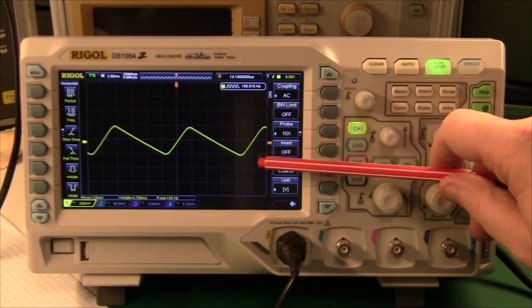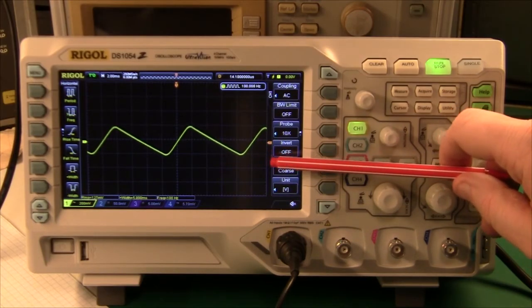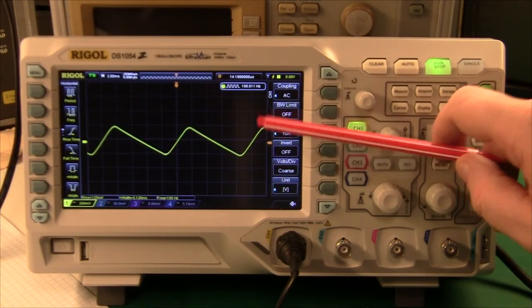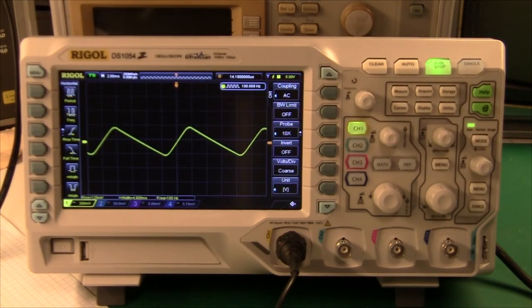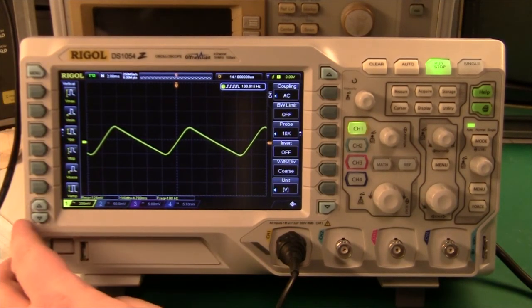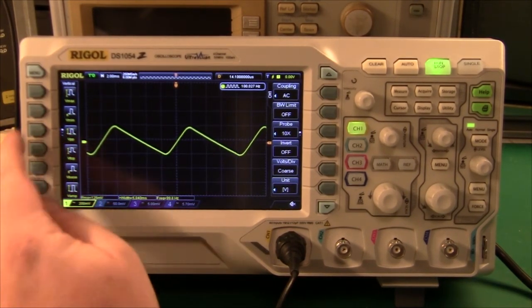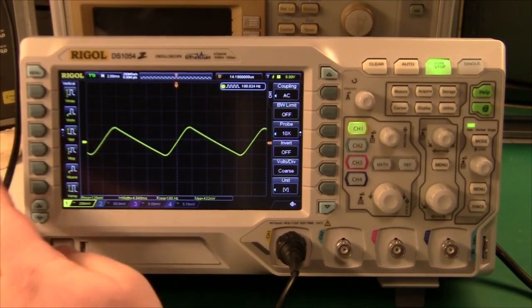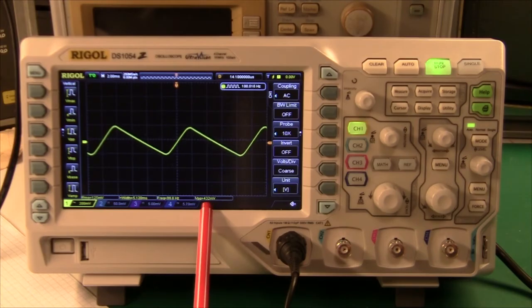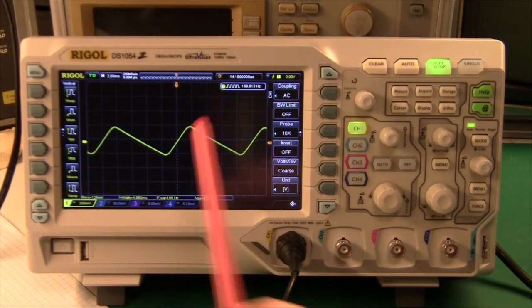So we have about two divisions, which is 400 millivolts. Some scopes like this one, I think it can also measure volts peak to peak. And immediately it does that. It says 430 millivolts. So that is our ripple here.